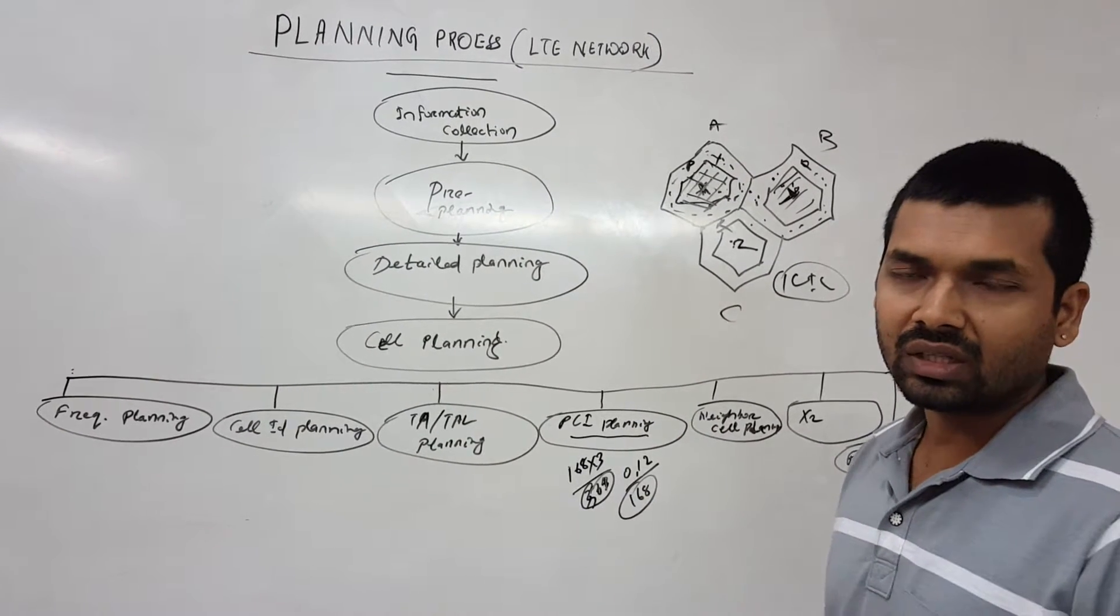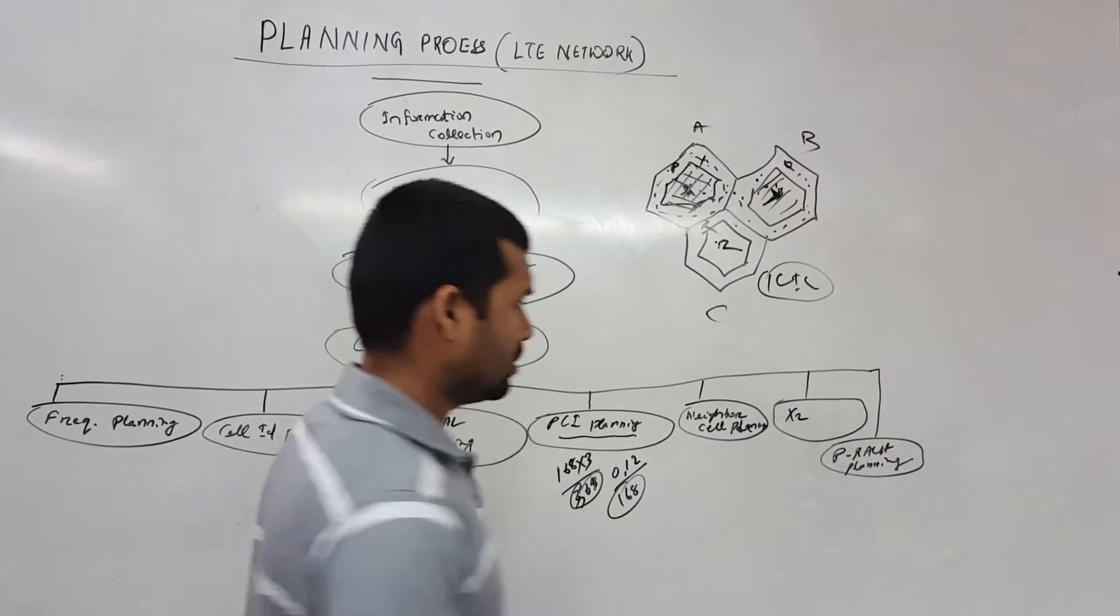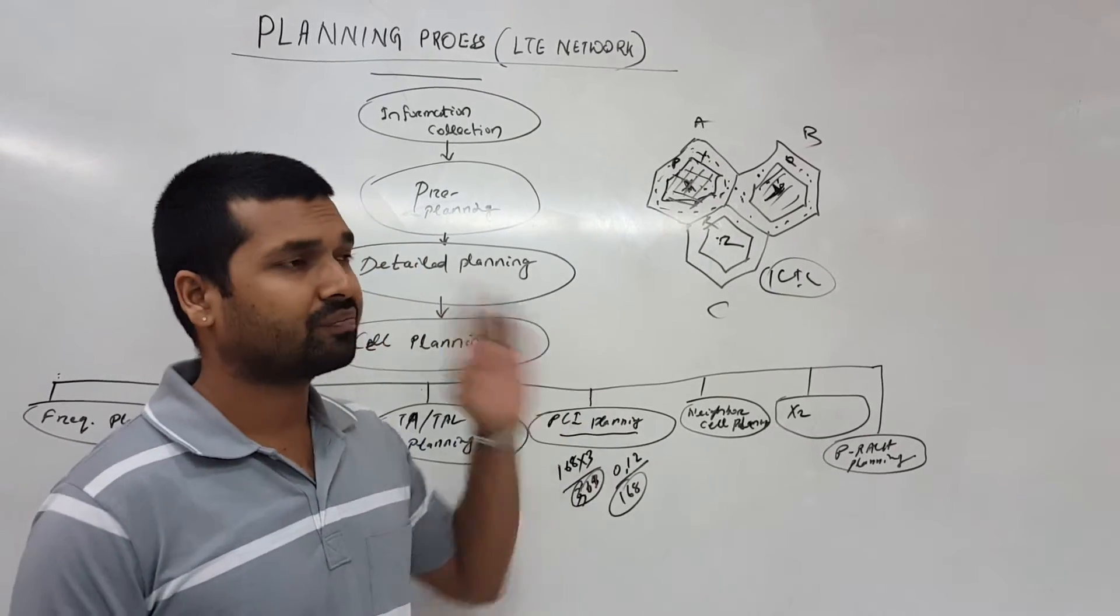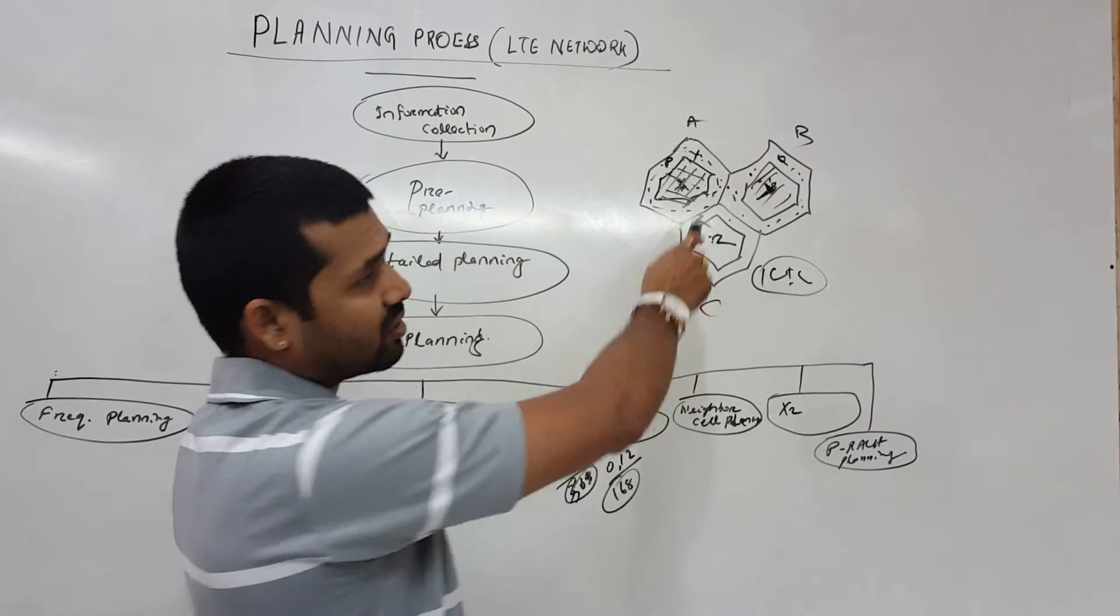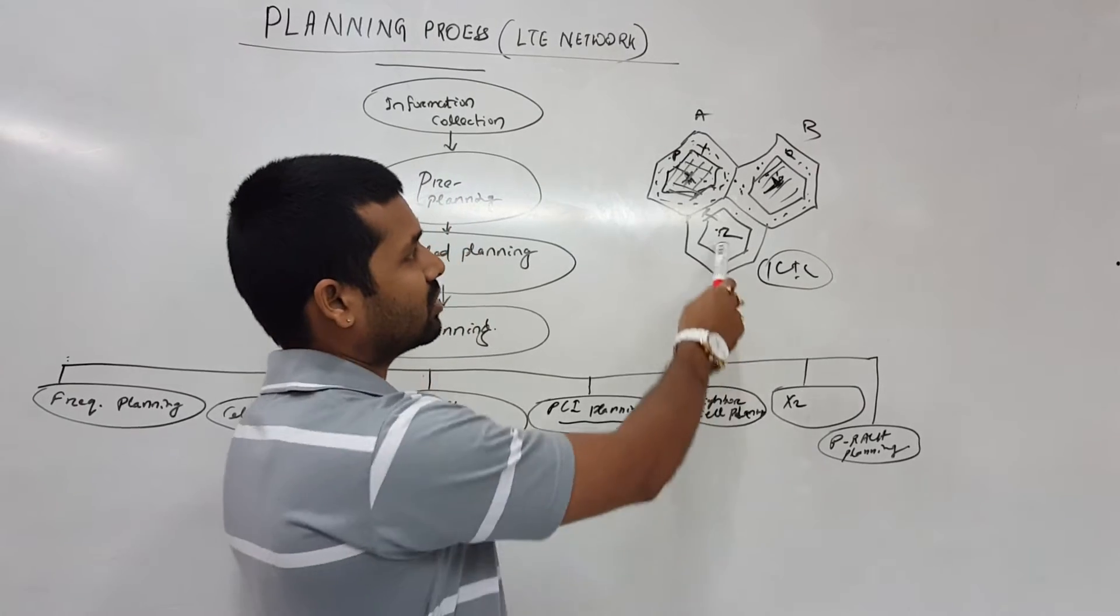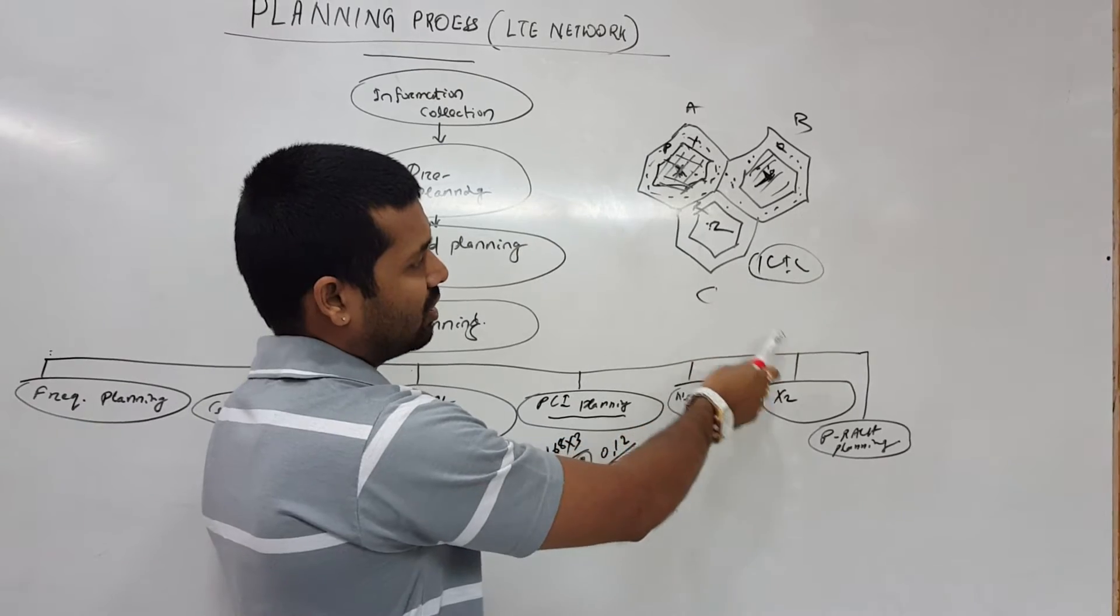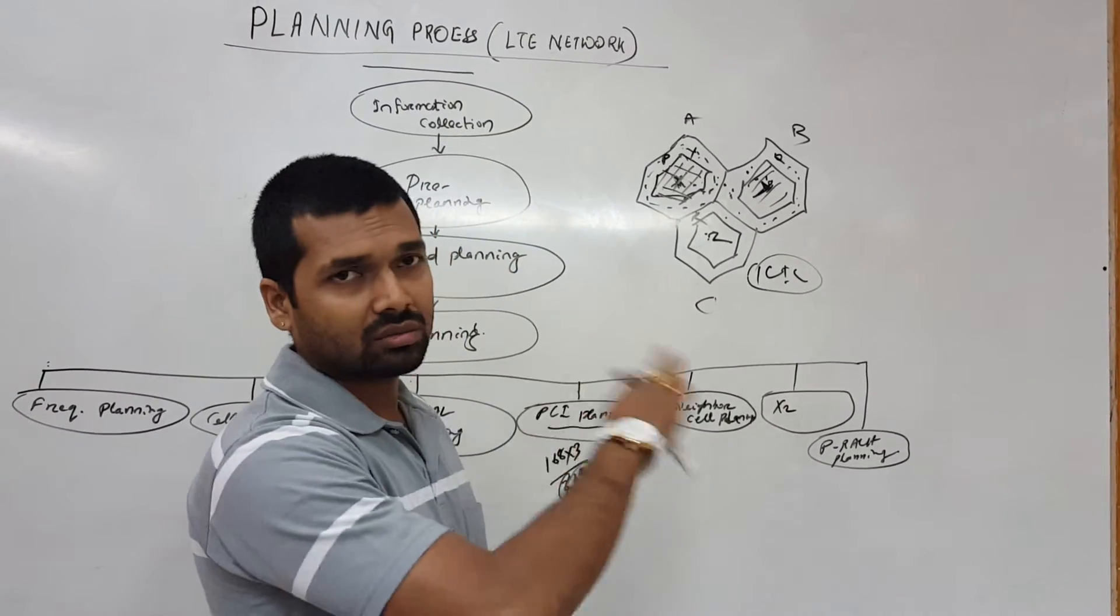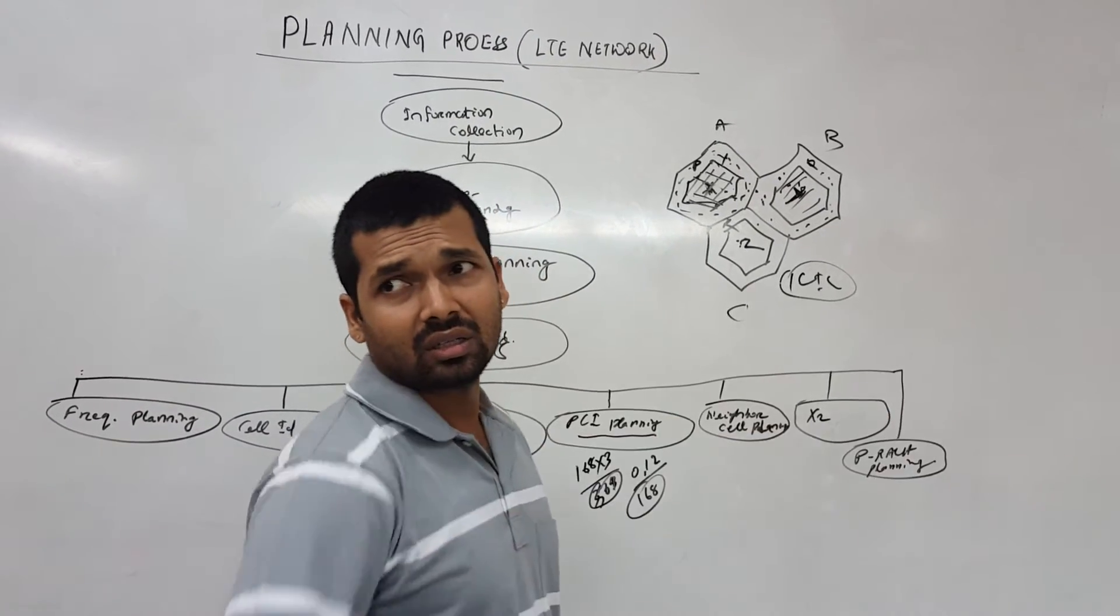And the next one is the neighbor cell plan. Unlike other technology 2G and 3G, we do plan the neighbors. Neighbor is geographically what is the closest site. Let's say this is the site, what is the closest site according to the geographical distribution, according to the geography. What are the nearest site? We need to add the neighbors. If there is a water body or something, the next site also to be added as a neighbor because we have very almost no loss in the water medium.